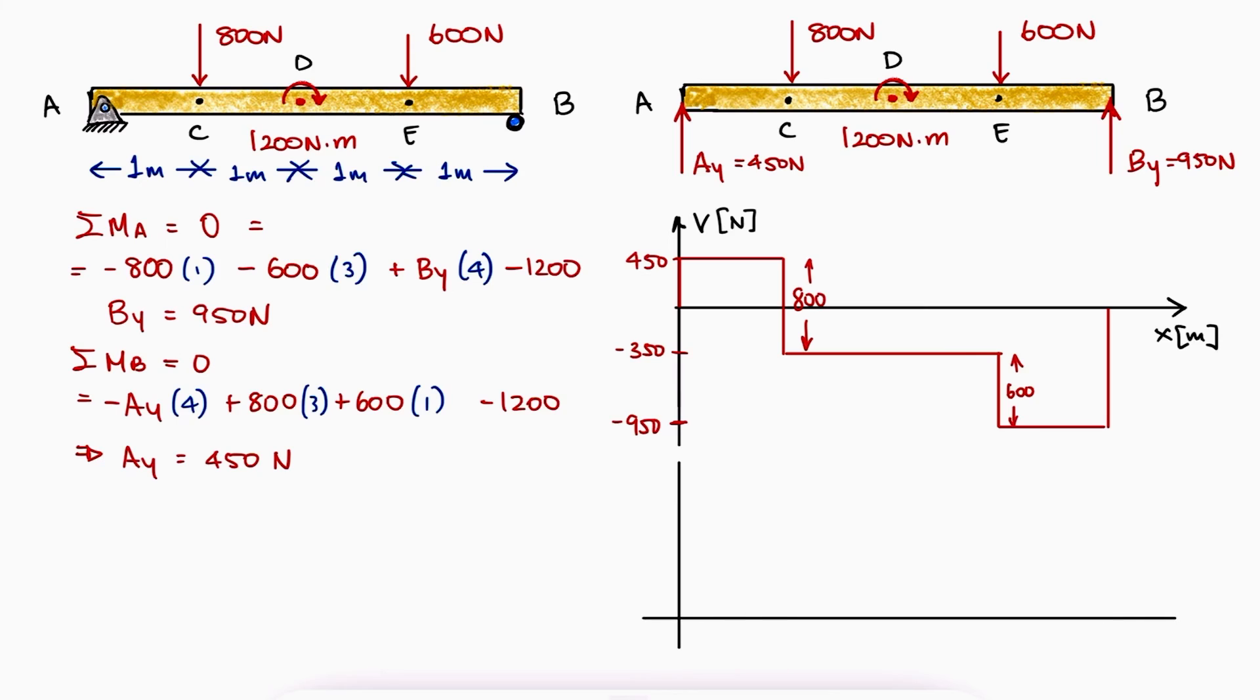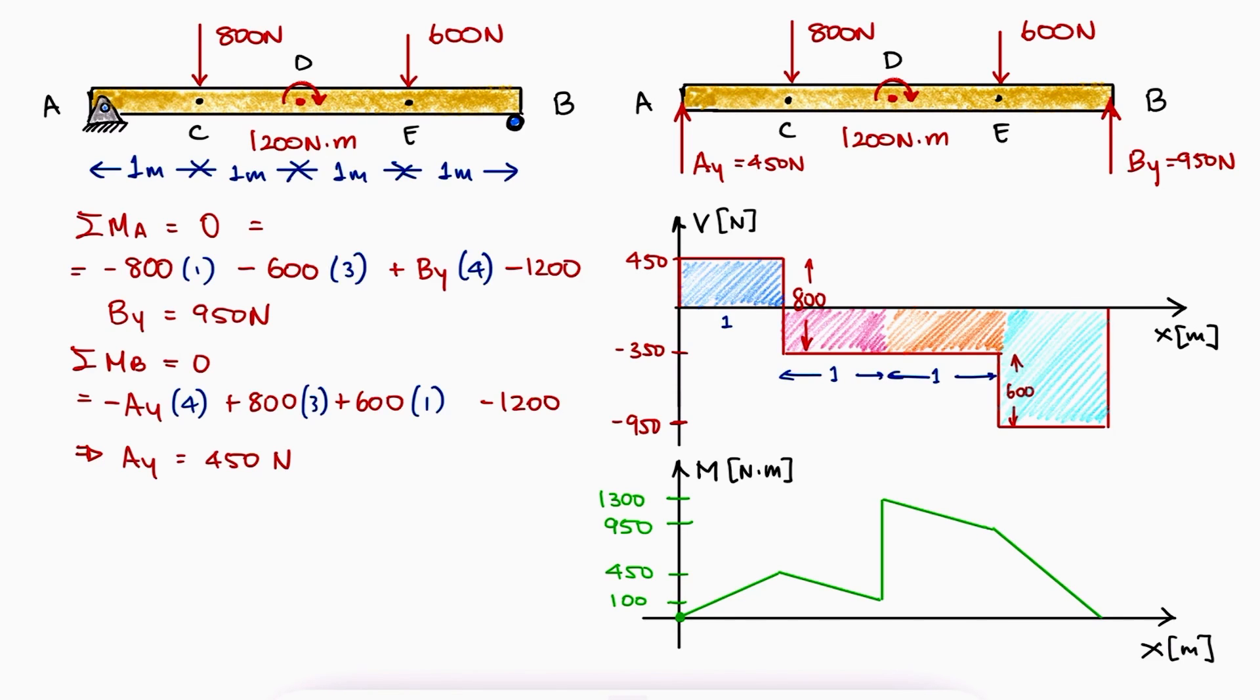For the bending moment diagram, and with the y-axis now in newton meters, we would start at zero because there's no external or reaction couples at A. With a slope of 450 for one meter, we would reach 450 at C. With a slope of minus 350 for another meter, we would reach 100 at D, and we would find a negative external couple that would cause a reaction moment that is positive, bringing us up by 1200 to 1300 newton meters at D. The slope from D to E would still be minus 350, that for another meter would bring us down to 950, and finally, with a slope of minus 950 for an additional meter, we would reach zero at B. Notice that the area under the curve of the shear diagram corresponds with the y-values between each section in the bending moment diagram.